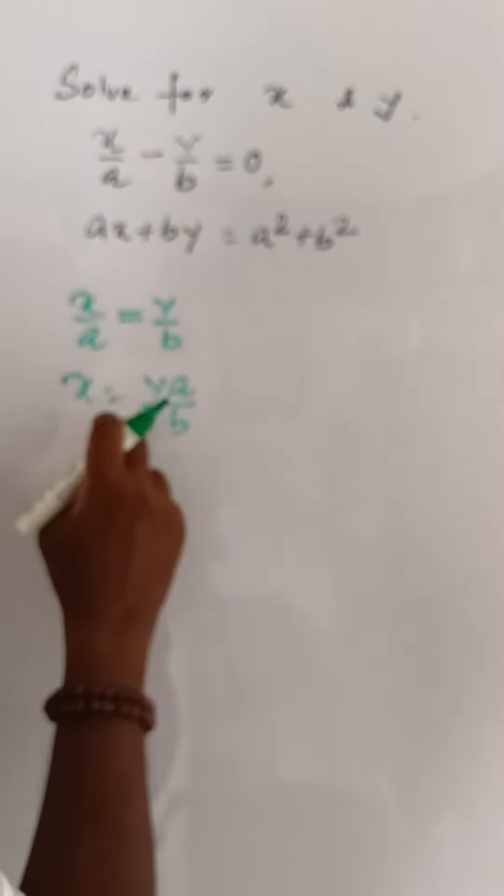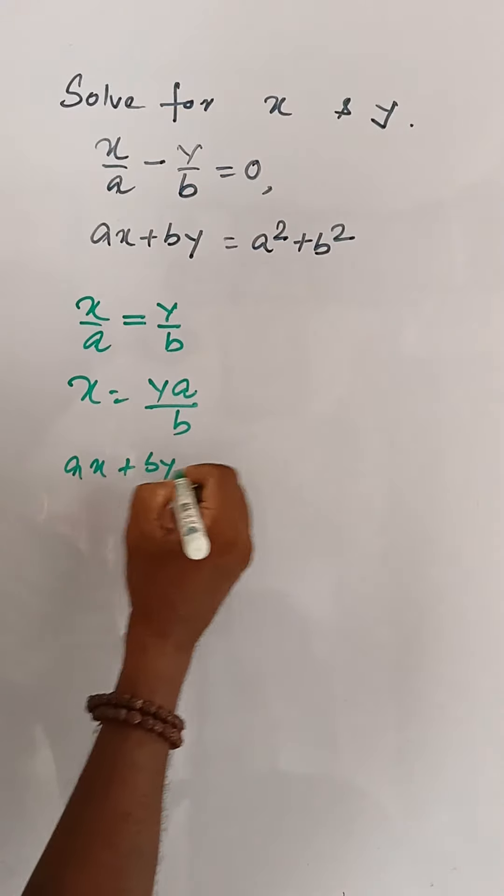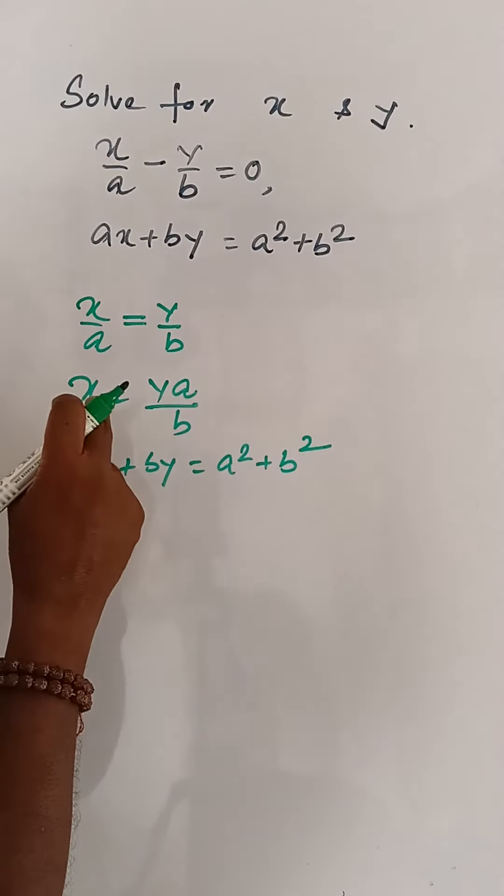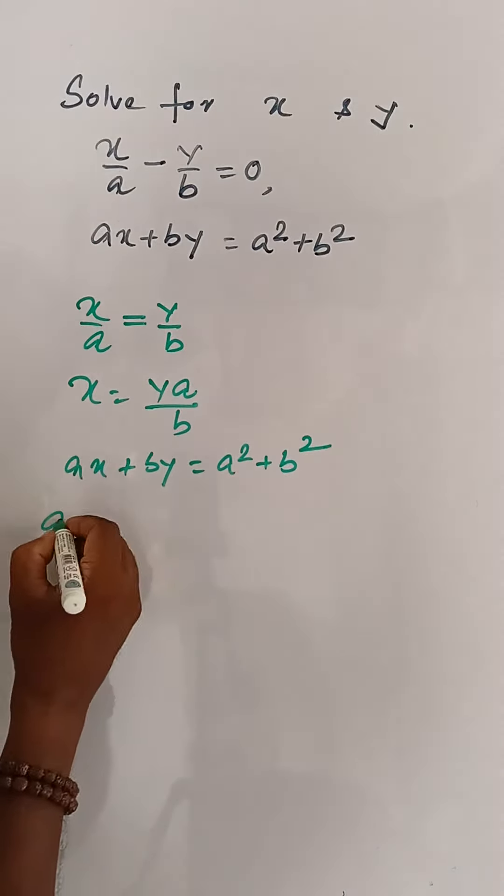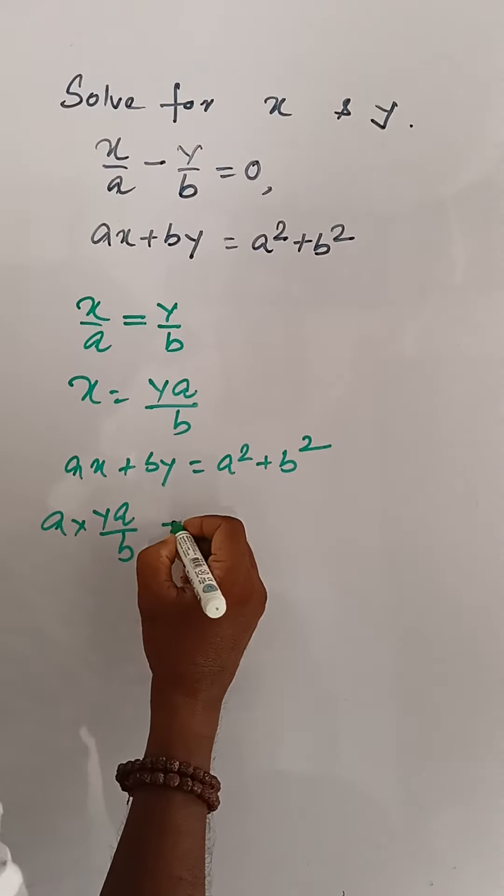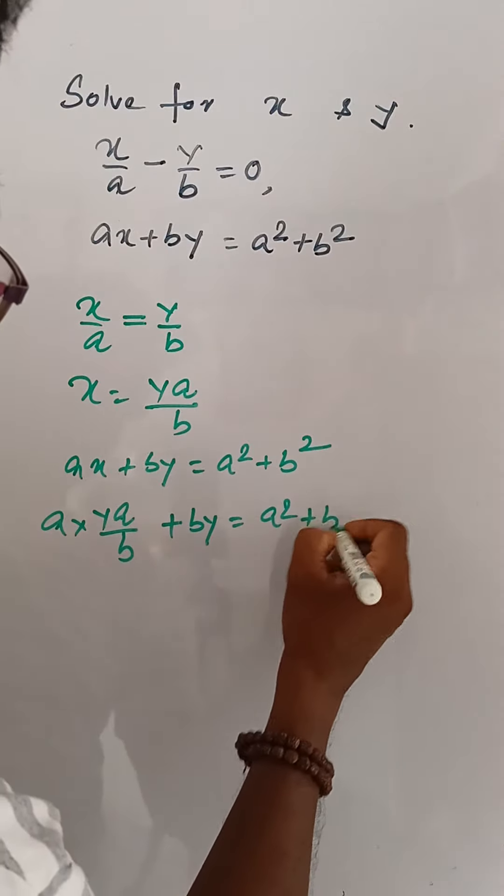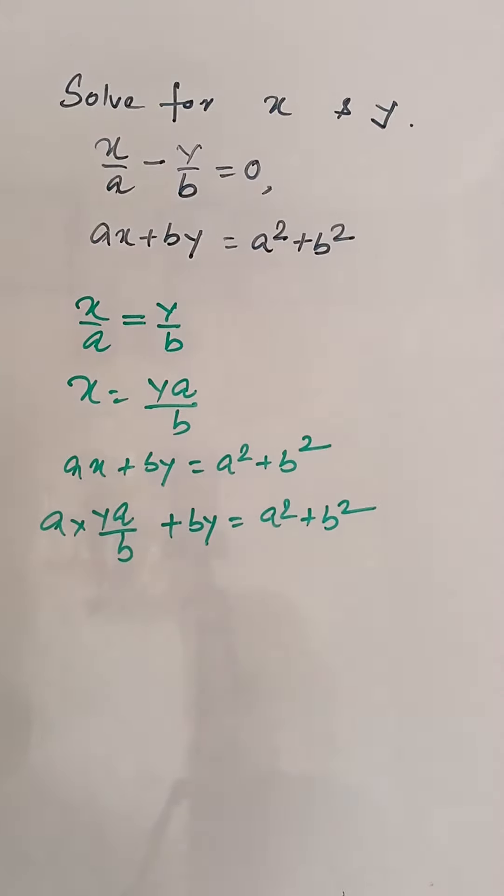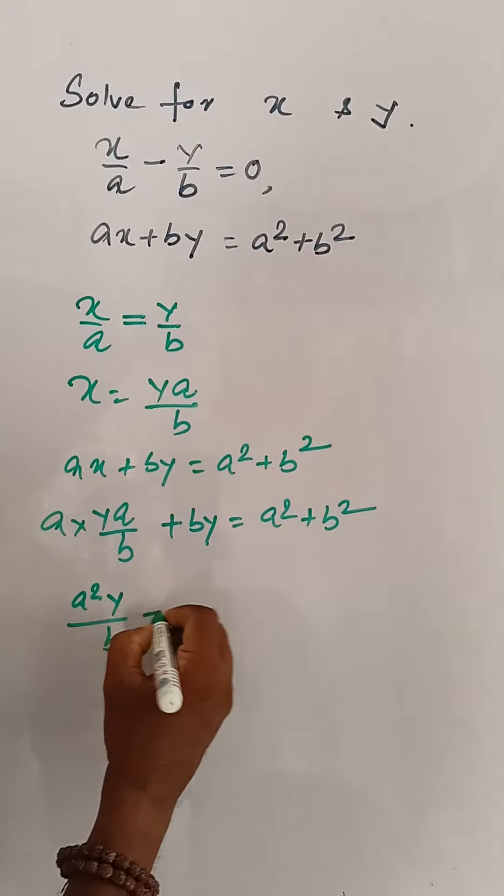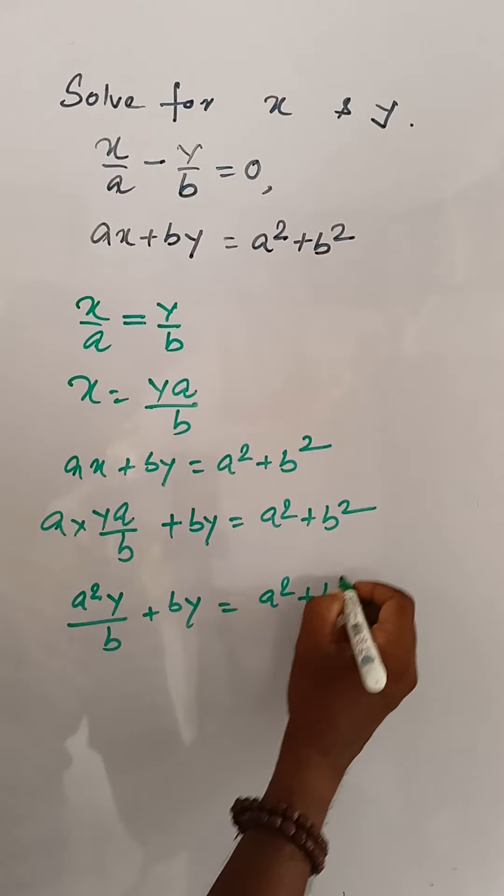Now putting this value in equation 2, which is ax + by = a² + b². For x, we substitute a(ya/b) + by = a² + b². This simplifies to a²y/b + by = a² + b².